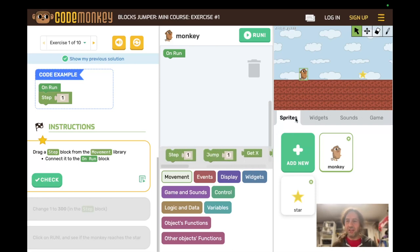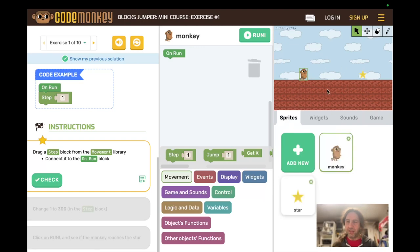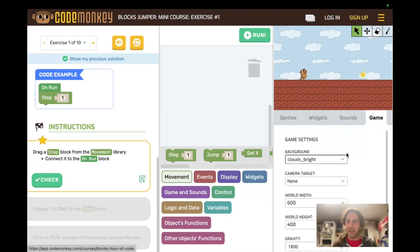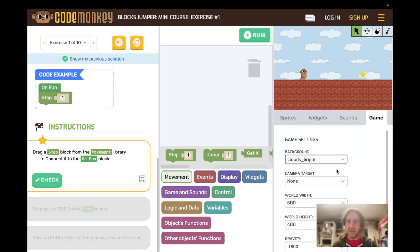Over on the right we have the tabs and we have sprites which we have two sprites on the board, a monkey and a star, widgets which I'm not sure if we use in this, sounds, and the game tab where you can change a number of elements and the run to get things started.